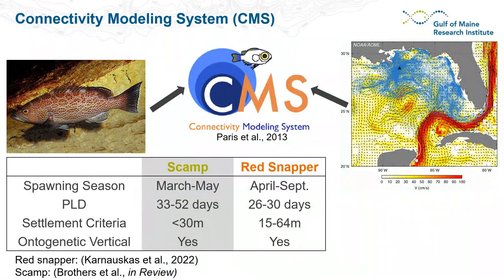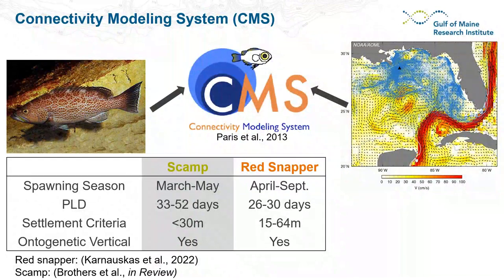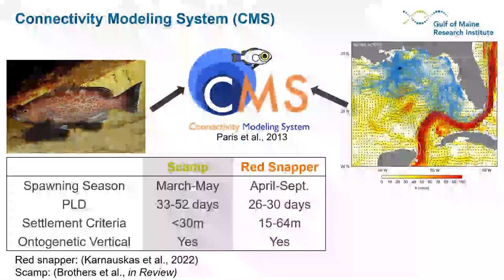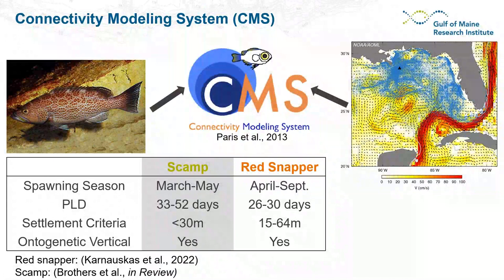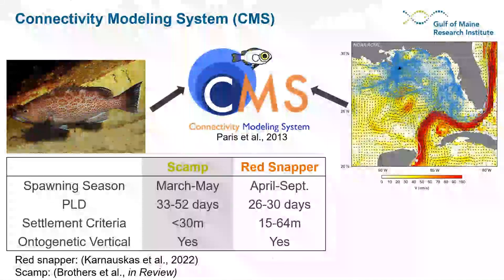We also allowed the vertical migration of particles to change throughout ontogeny, so early in the pelagic larval duration we assume one vertical distribution and later we assume another. All of these biological model inputs are derived from data analysis or literature review, and they've been used extensively for larval dispersal simulations for both scamp and red snapper, with sensitivity analyses on all aspects. The red snapper work has already been published and the scamp work is currently in review.